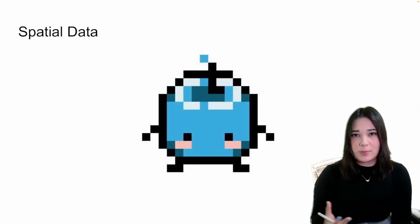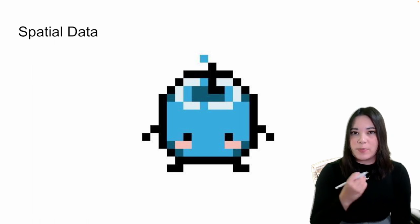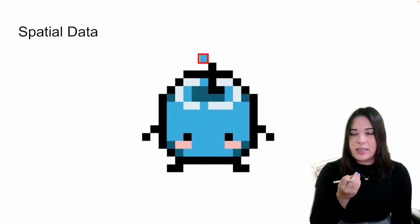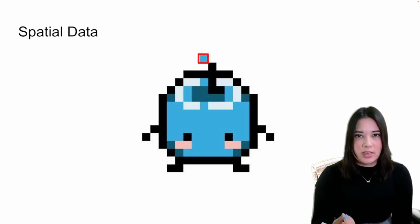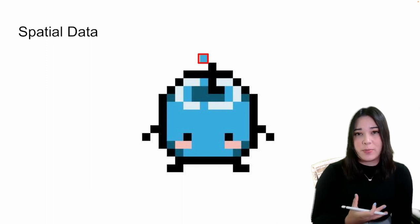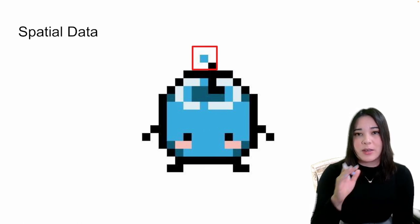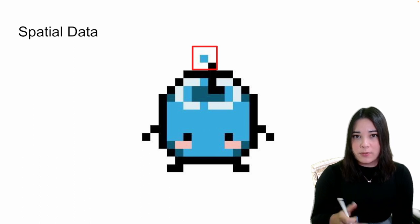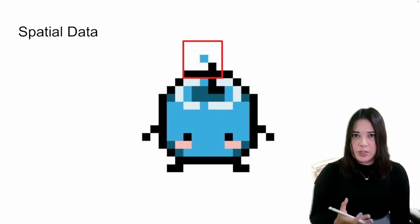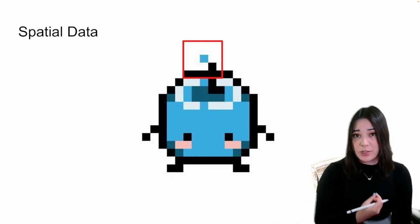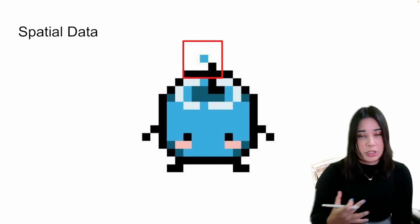Data with spatial relationships is usually something like an image. In an image, the pixels have spatial relationships with all of the different pixels around them. If I just look at an individual pixel, it doesn't really tell me much about what's going on. But if I look at the spatial relationships between that pixel and the pixels around it, it gives me a little bit more info. Feed-forward neural networks don't take into account these spatial relationships, so we might want an architecture that does.